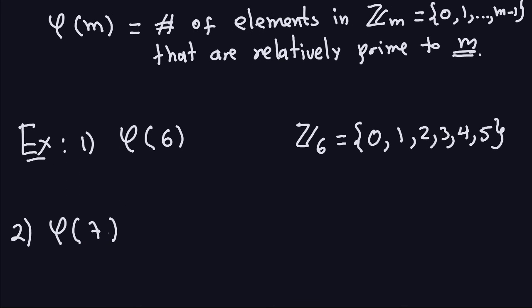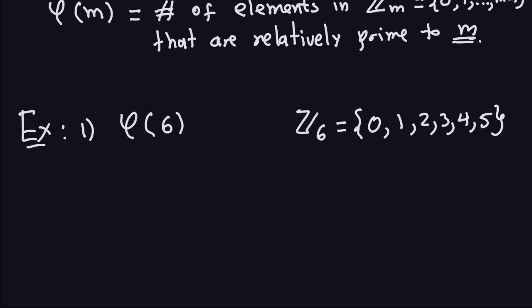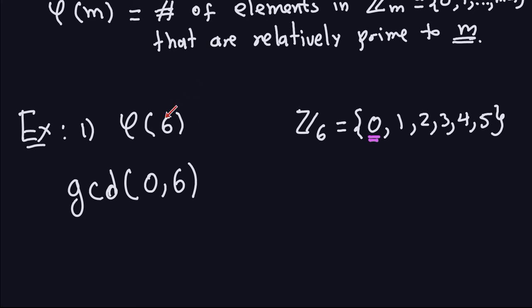Now I have to make a list of the ones that are relatively prime with 6. Let's go through all the numbers. Starting with 0: what is the GCD between 0 and 6? If this gives me 1, then 0 would be one of the relatively prime numbers. The GCD between 0 and 6 is actually 6. Think about why: every time you have 0 as one component of the GCD, the other non-zero number is the GCD. So 0 and 6 are not relatively prime.